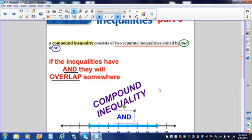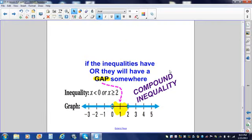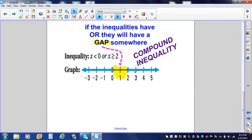The second kind of compound inequality would be for the word OR. If the compound inequality has the word OR, we're going to have one inequality going to the right, one inequality going to the left, and we will have a gap between them.